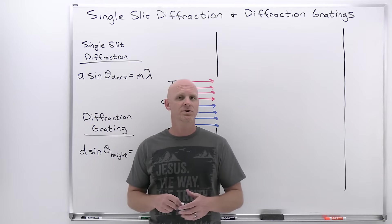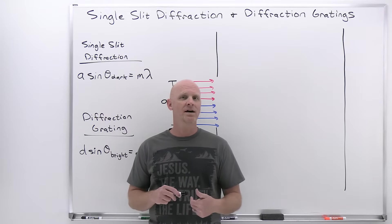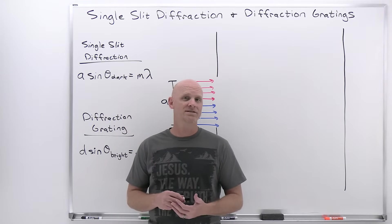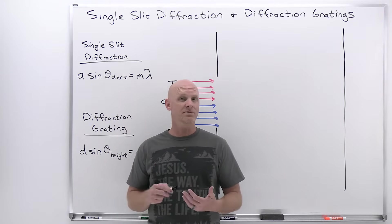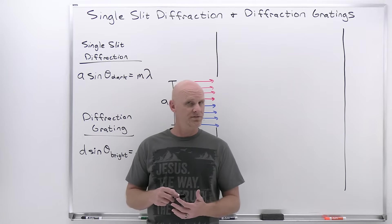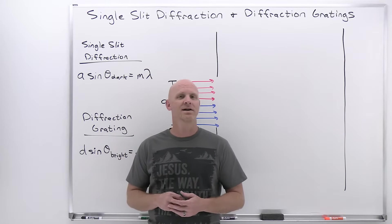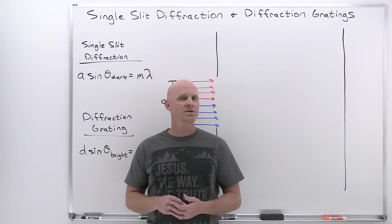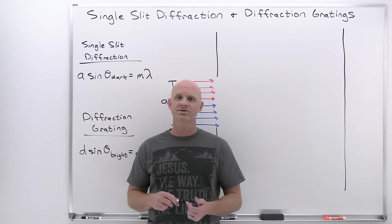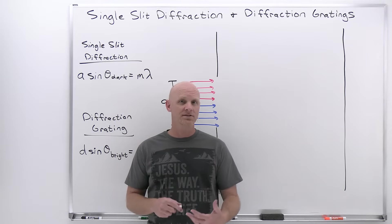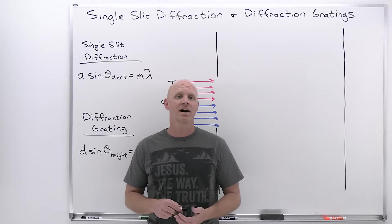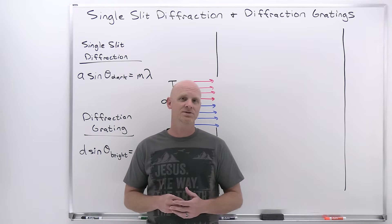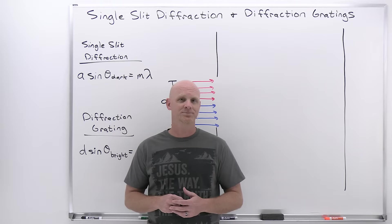But in this lesson, we'll learn that light even passing through a single slit has the possibility of interfering with itself. We'll also talk about diffraction gratings, where instead of just one slit or two slits, we're going to have many, many slits, and there are characteristic interference patterns associated with that.